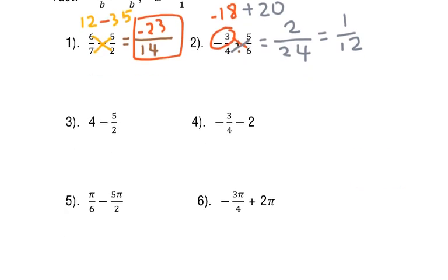Number three: the whole number 4 is counted as 4 over 1. Using the same approach, the denominator is 1 times 2, which is 2. Cross multiply: 4 times 2 is 8, and 1 times negative 5 gives minus 5. The result is 3 over 2.